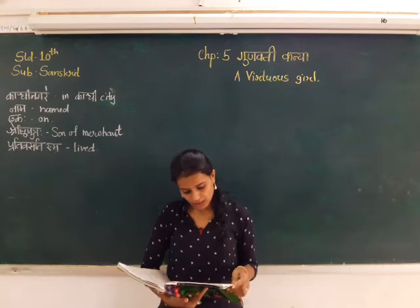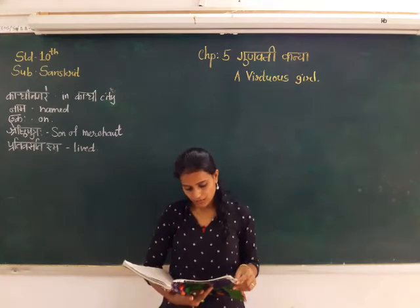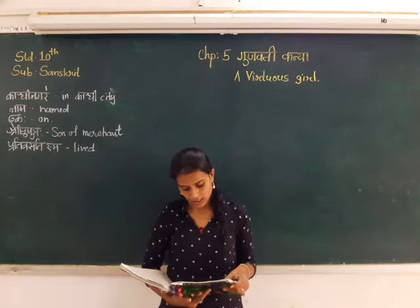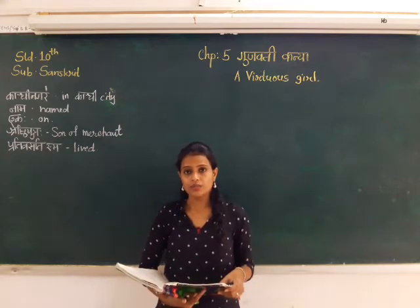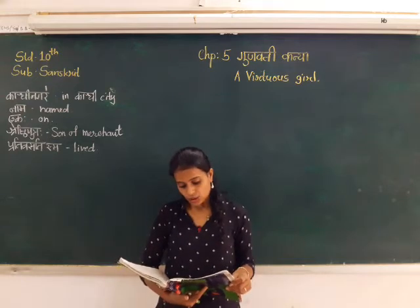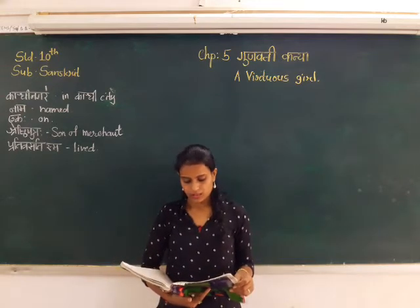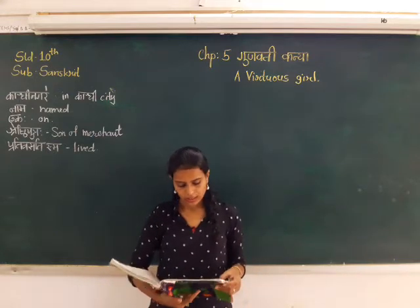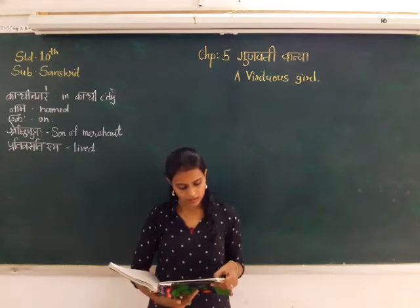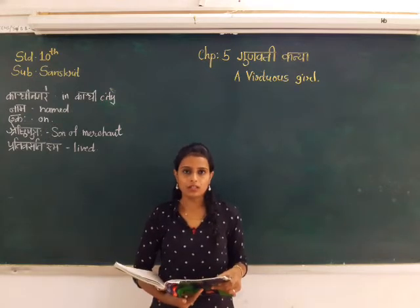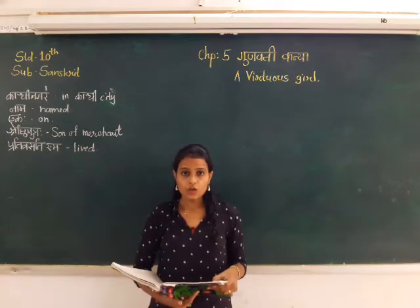The next words are: Sa — he; Yada — when; Sva Kiyashya — of his own; Jeevanashya — life; Dravimshitame Varse — in the 22nd year; Pravishta — entered; Tada — then. He then Chintayamanas — started worrying.